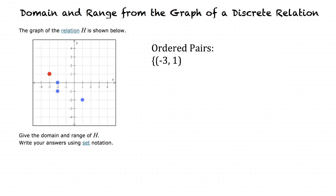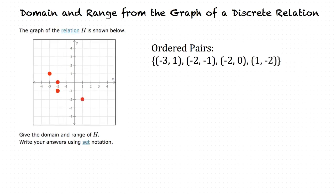Negative 3 comma 1, negative 2 comma negative 1, negative 2 comma 0, and 1 comma negative 2. How do we find the domain from these points? The domain of h is the set of all first elements in the ordered pairs. In this case, it would be negative 3, negative 2, and 1.